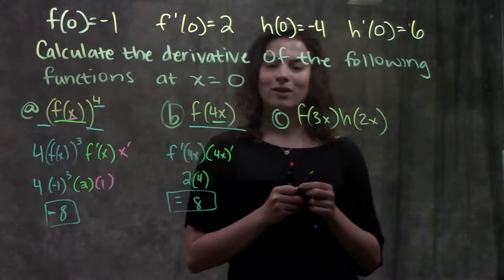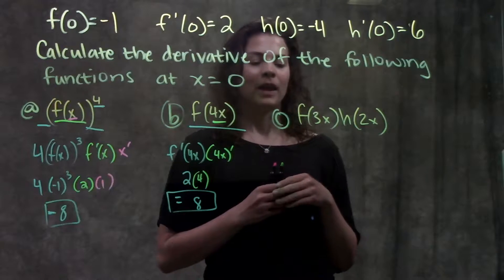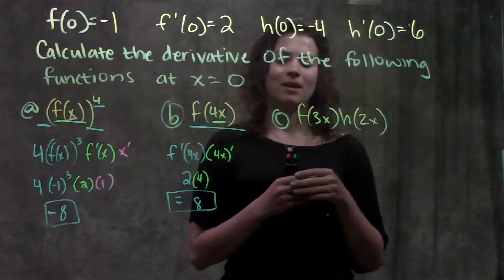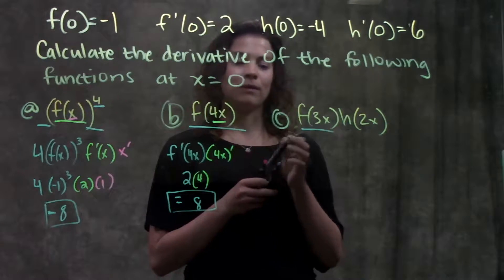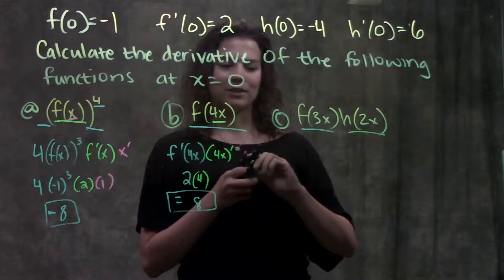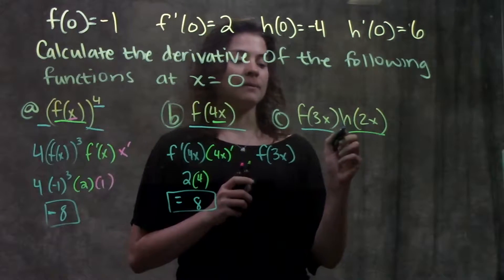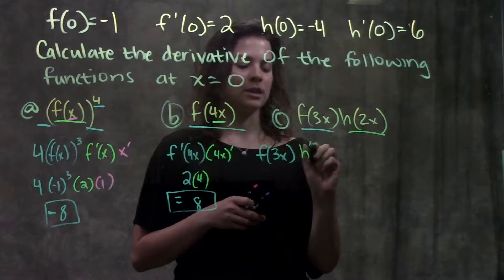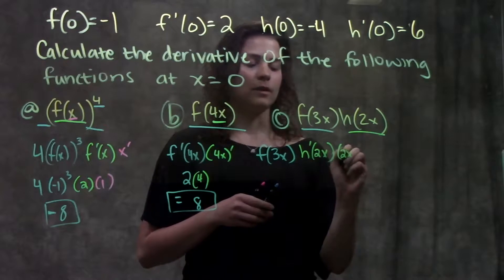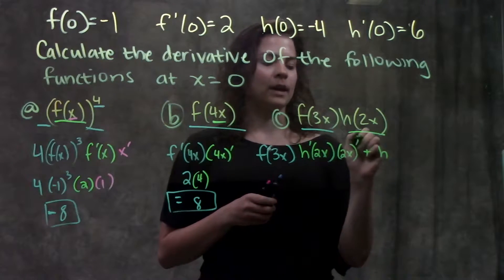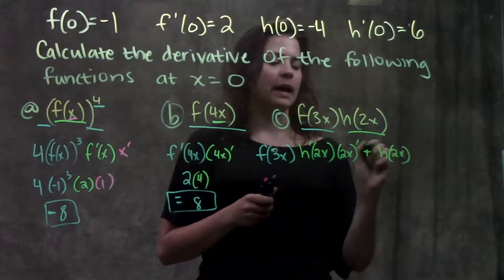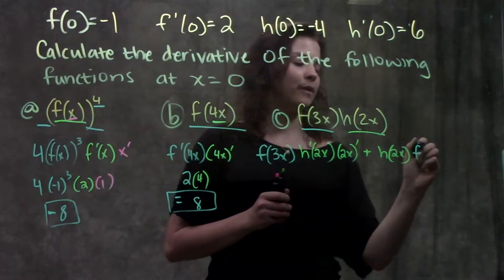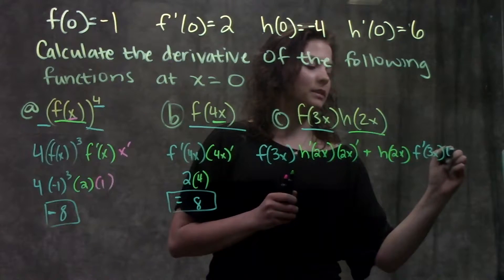Moving on to part C, which is a little more involved. It gives me f of 3x times h of 2x. Looking at this function, I see I have two functions being multiplied by each other, so I'm going to have to use the product rule — and within that product rule, I'll have to use chain rule as well. Product rule tells me: take the first, times the derivative of the second, plus the second, times the derivative of the first. My first function is f of 3x. The derivative of the second, h of 2x, using chain rule is h prime of 2x times the derivative of 2x, which is 2x prime. Plus the second, h of 2x, times the derivative of the first, f of 3x: that's f prime of 3x times 3x prime.